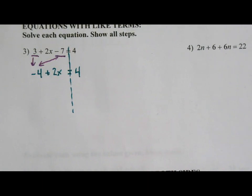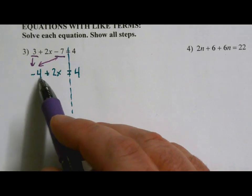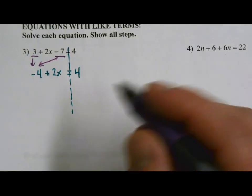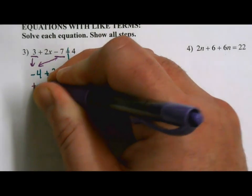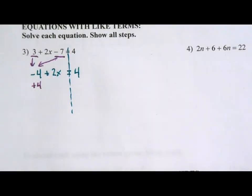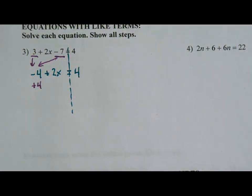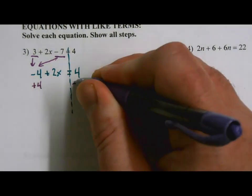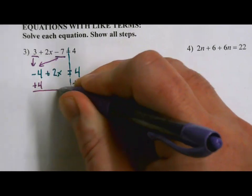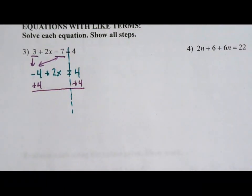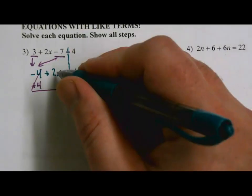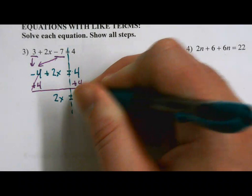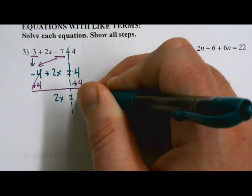It's time to go ahead and start solving this, so we're going to work to get that x by itself. Right now we've got a 4 that's subtracting and a 2 that's multiplying. Let's take care of addition and subtraction first. The opposite of subtracting 4 is to add 4. We'll cancel that negative 4 and make it go away. But when we're solving, we have to do the same thing on both sides of the equal sign. So I'm putting a plus 4 over here as well. Negative 4 plus 4, those cancel. What I'm left with is a positive 2x. Bring down my equal sign and over here I have 4 plus 4, which is 8.